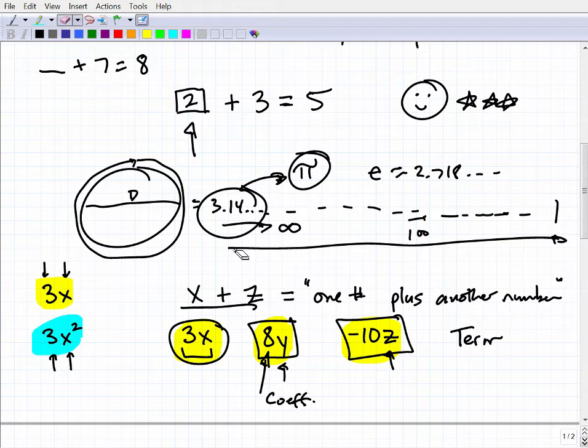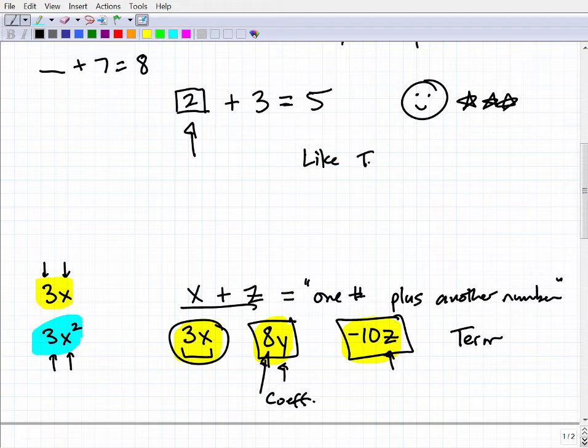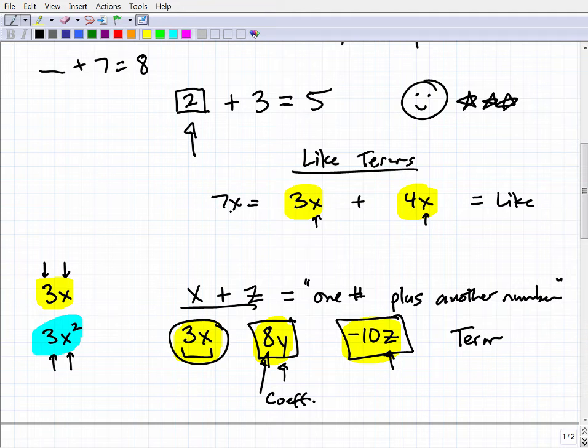Now something you're going to have to definitely know about, and I think we'll kind of call it a wrap here after I introduce you to this concept, is the concept of like terms. Let's say you have 3x and 4x. These two terms, we consider these guys like. The reason why they're like—and remember these are independent terms—is because they have the same exact variable part. So in algebra, we can actually add these guys or subtract them. 3x plus 4x equals 7x. When you have like terms, you can add them up by simply adding the coefficient parts.